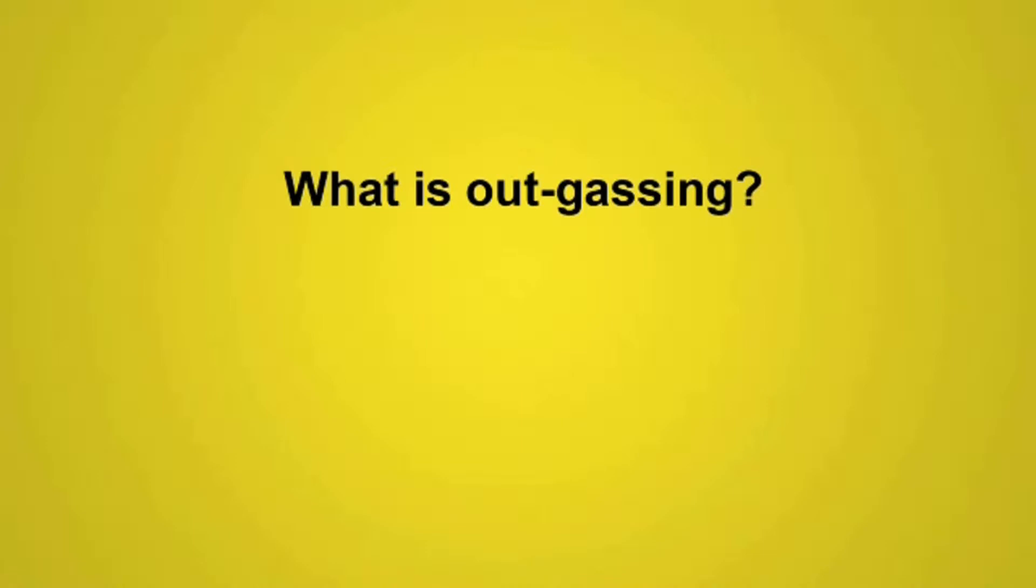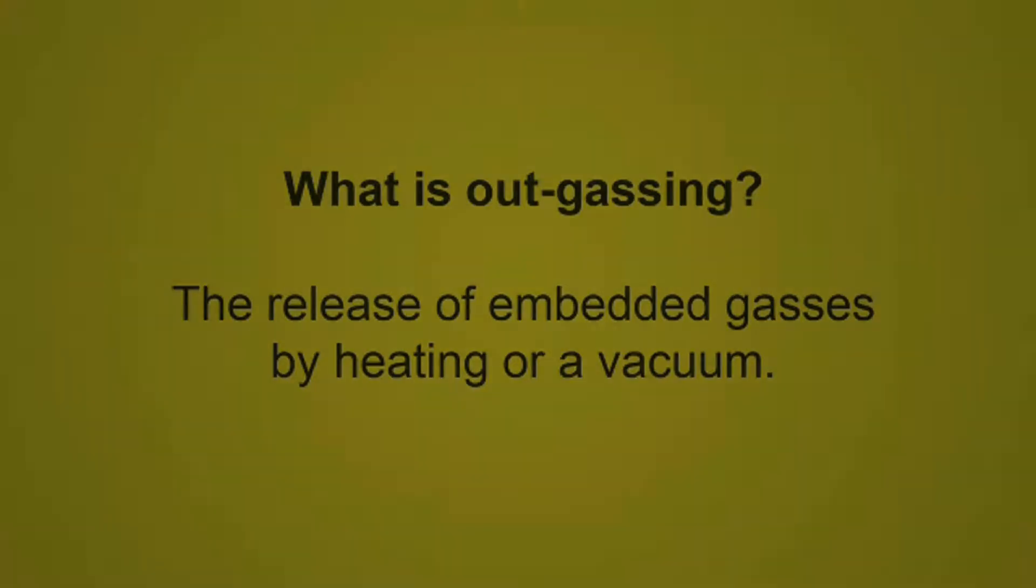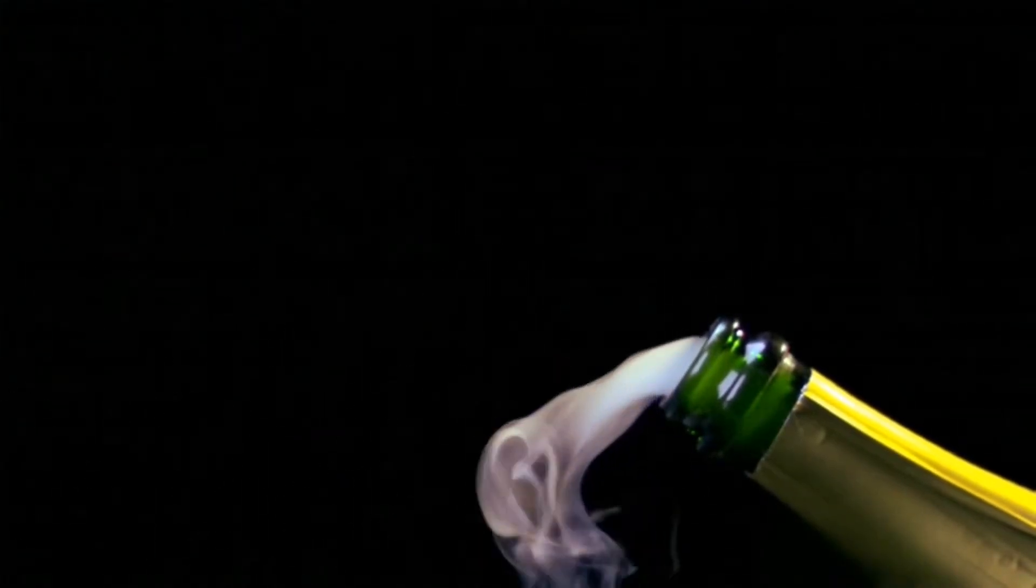What is outgassing? Outgassing is the release of embedded gases by heating or a vacuum. Think of a bottle of champagne. When the cork is removed, bubbles appear. That's an example of outgassing.